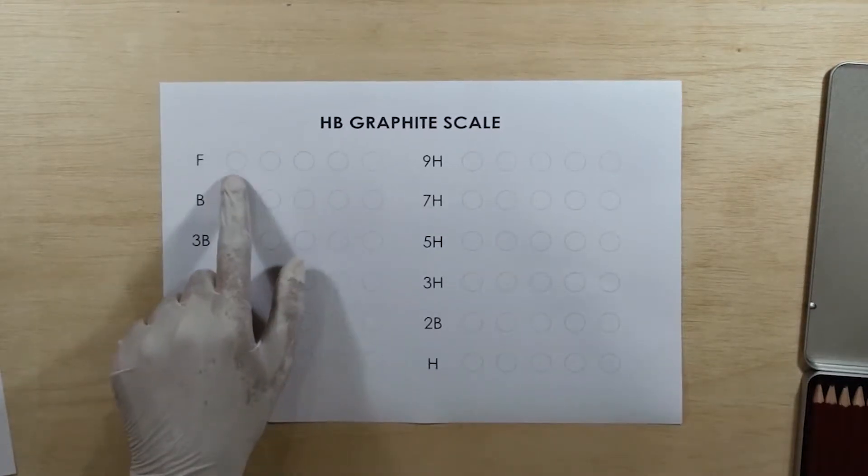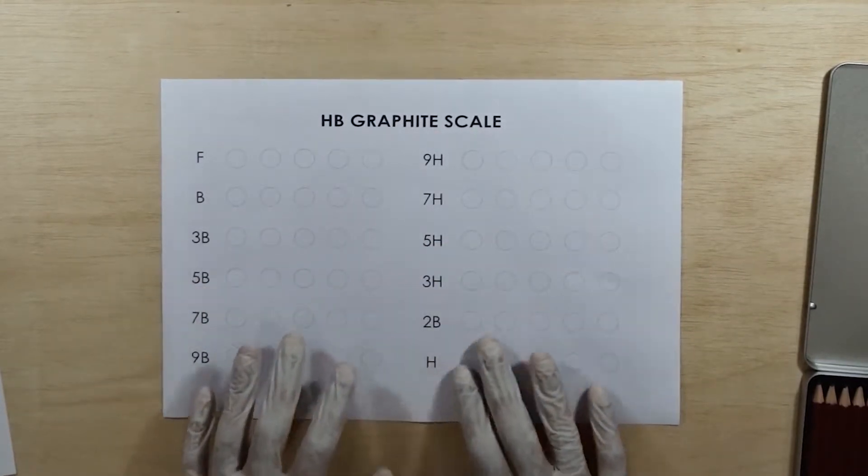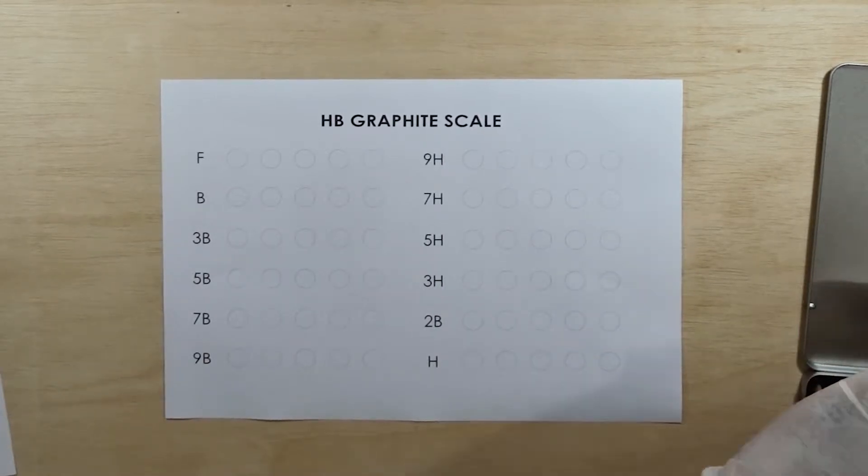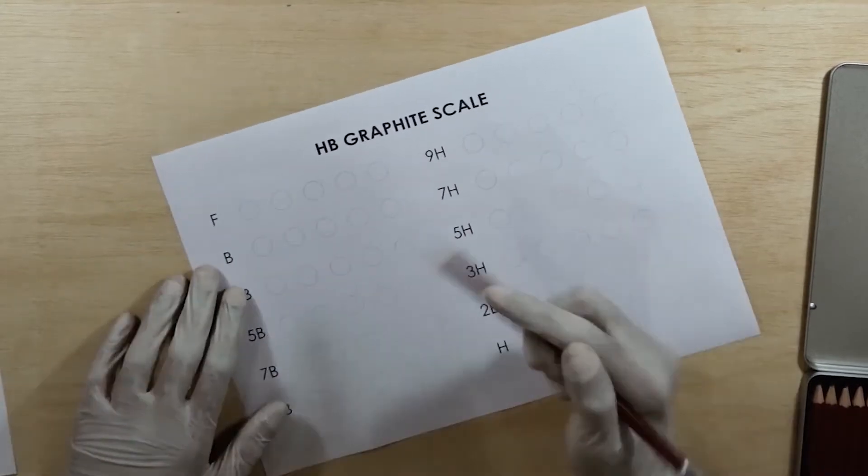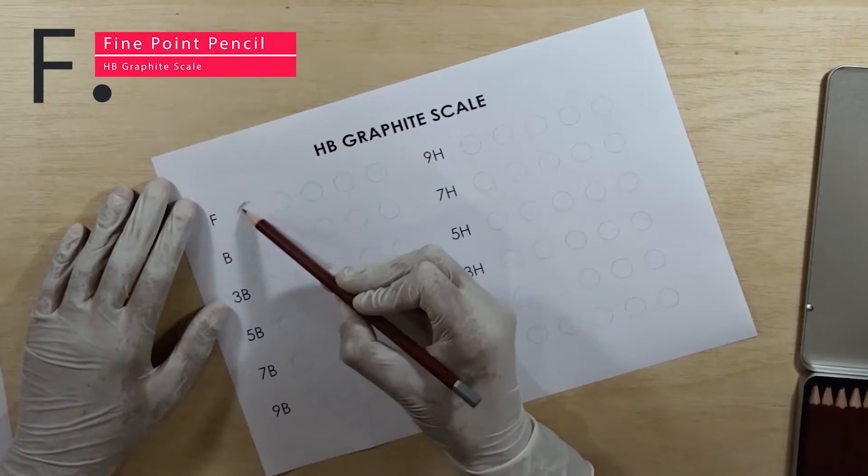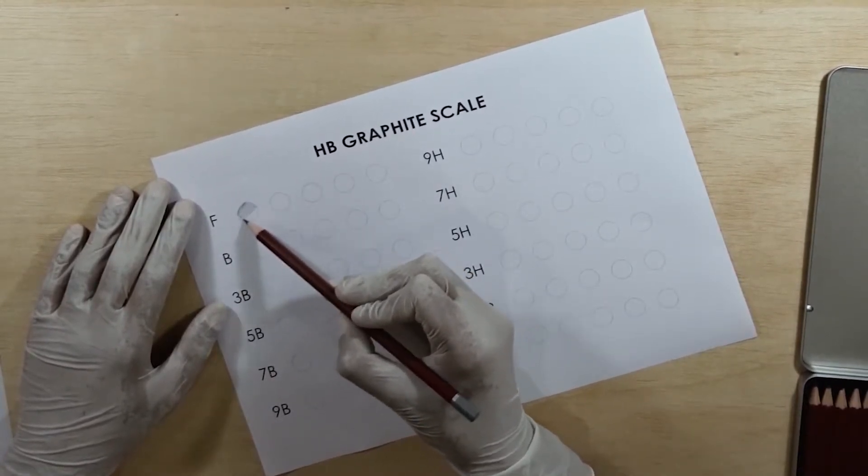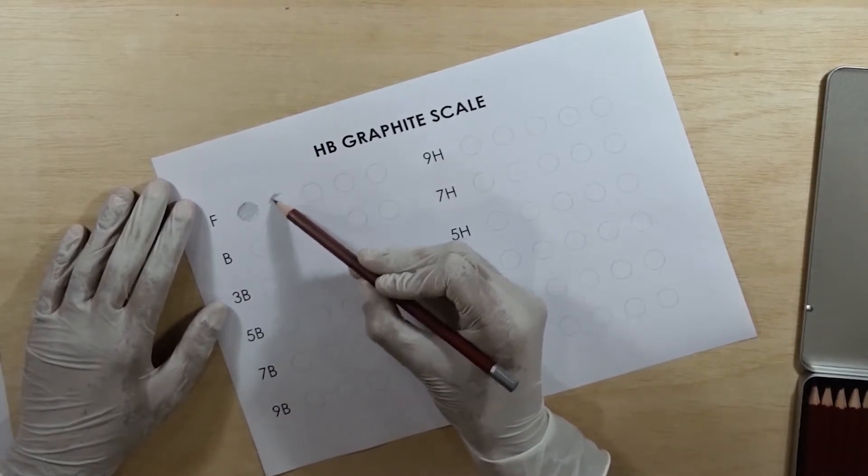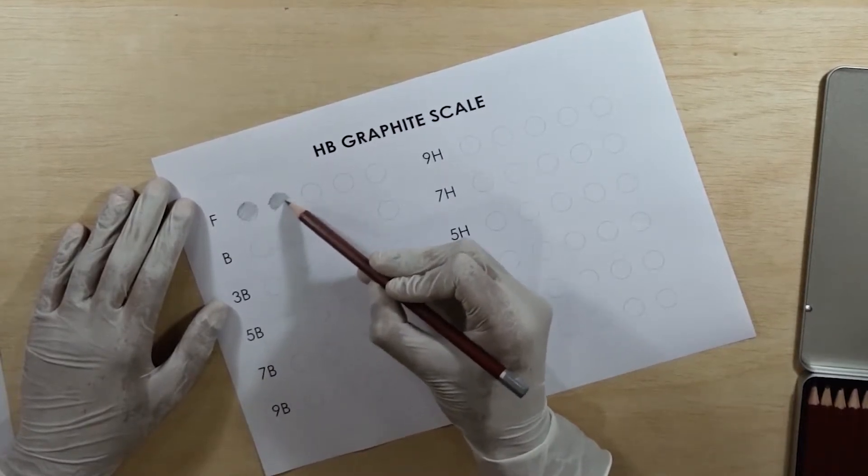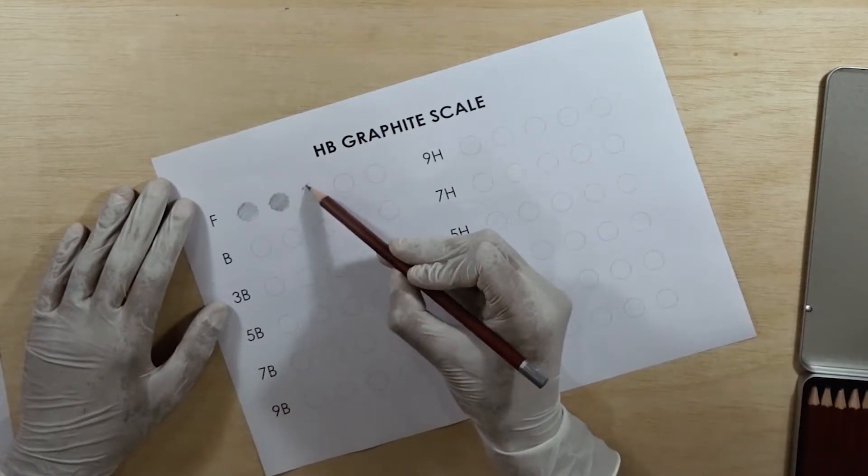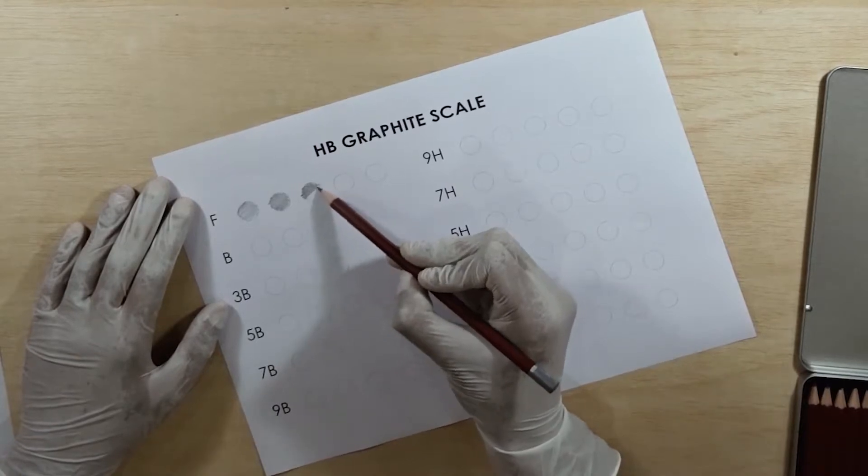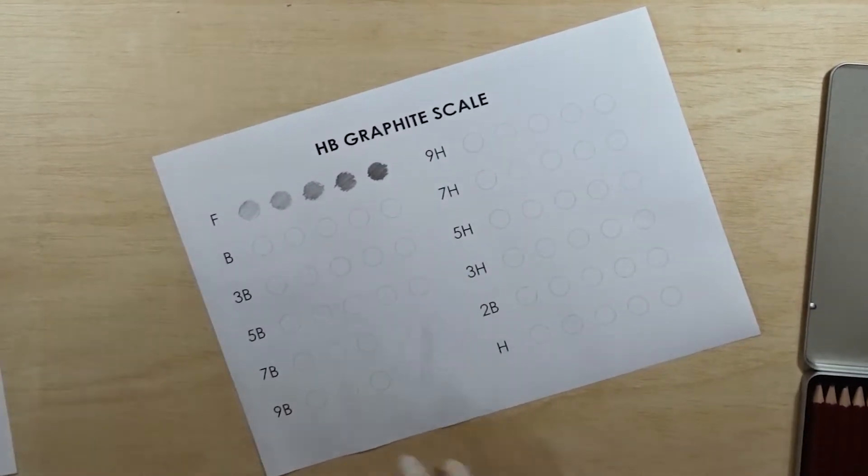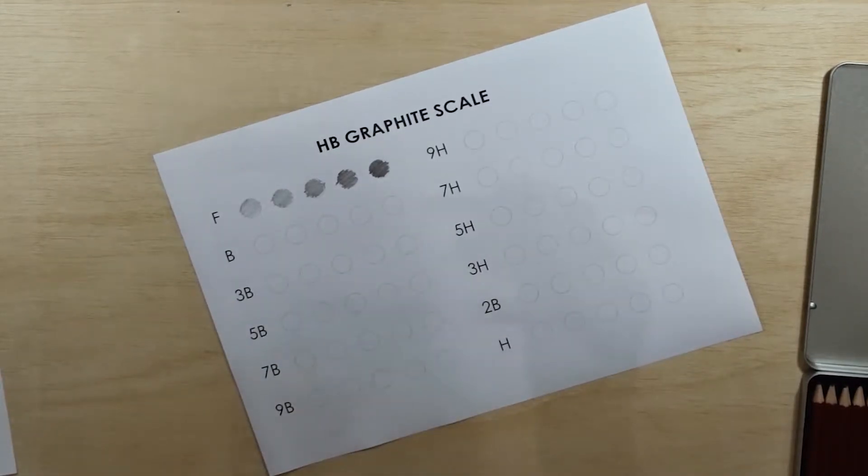So I will show you two examples and then you will have to fill this form by yourself. Let's start with this F. We have got our F pencil. Now what you will do is lightly fill this circle like this, and then you will apply a little bit more pressure than the last one, and so on. Apply a little bit more pressure than the second sphere.